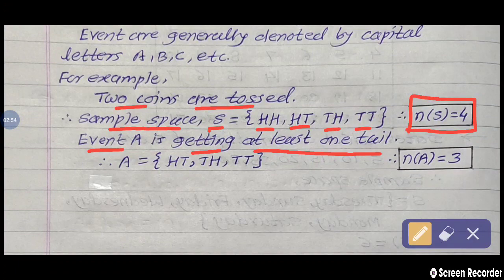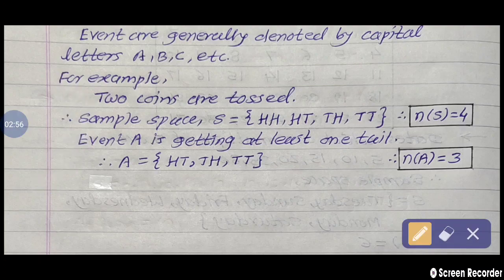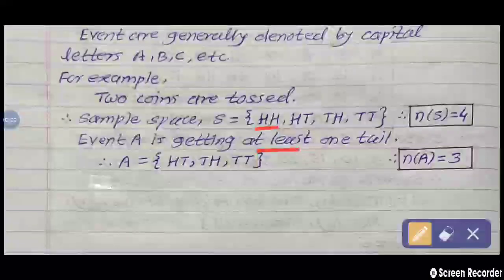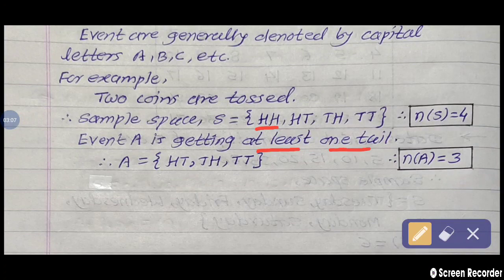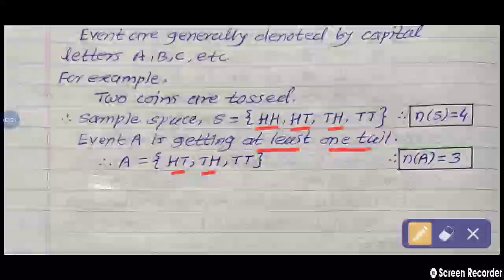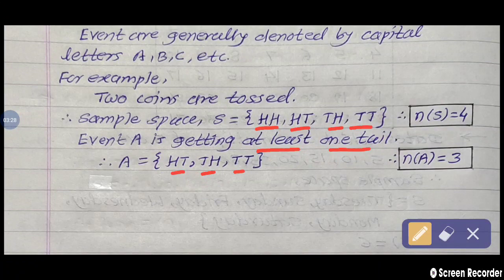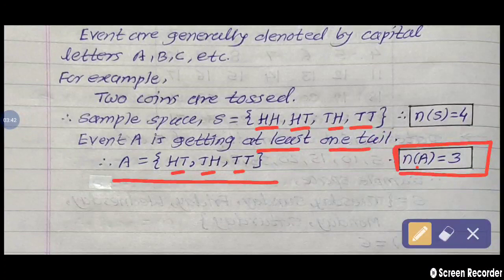At least one tail — in the first sample point H and H, tail is not there. We require at least one tail or more than one tail in a sample point that we write in the event. So remaining three points have a tail present: H-tail, tail-H, and tail-tail. One tail or more than one tail is present in those points, so we write them in event A. That is why N of A is equal to three.